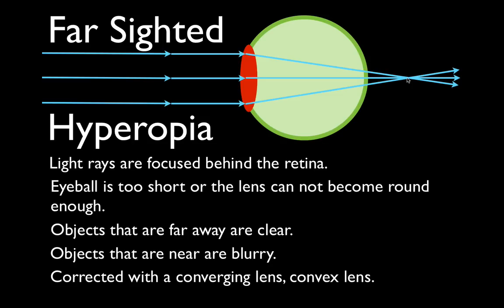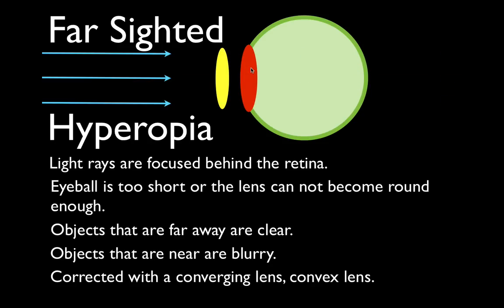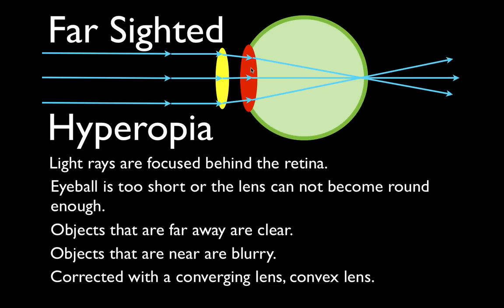When you get glasses for farsightedness, you are getting converging lenses — convex lenses. The same applies to contacts, which have a special shape so you can put them in your eye. So now you have two converging lenses: one in your glasses and one in your eye. When light rays strike the first lens they're converged, and then when they hit the lens in your eye they're converged again. With the right prescription, they meet right at the retina and you can see clearly.